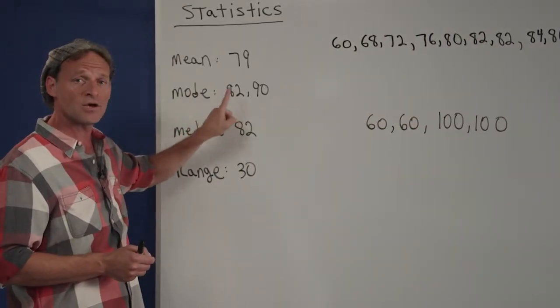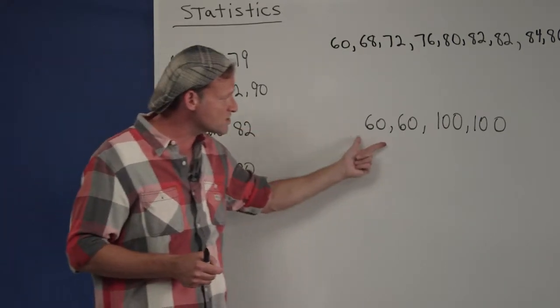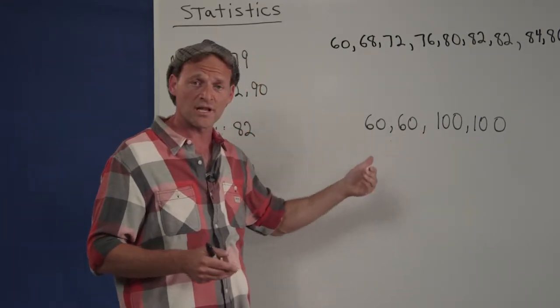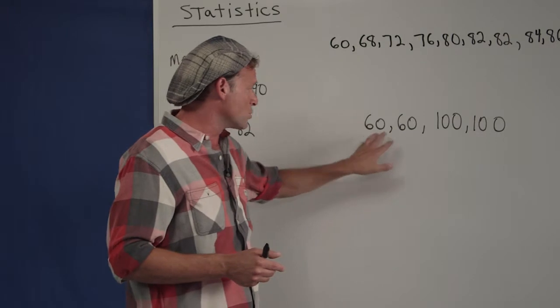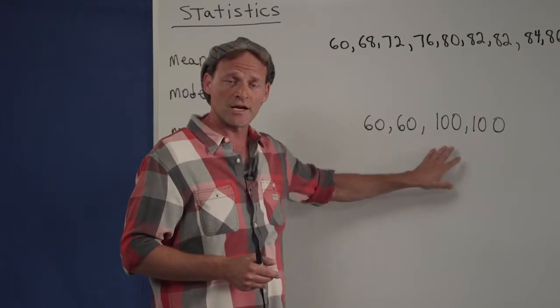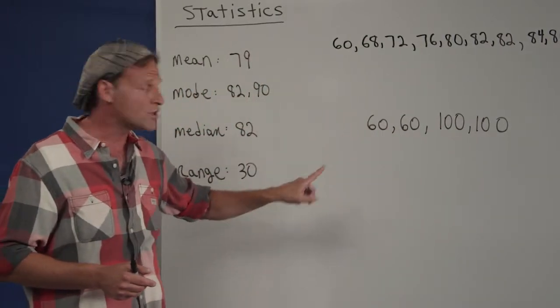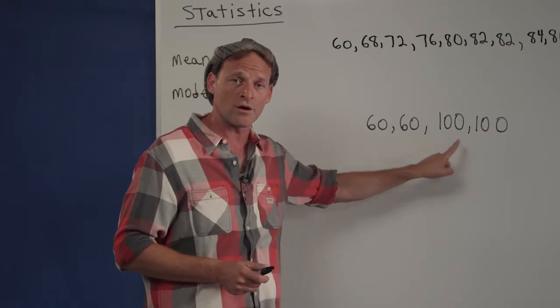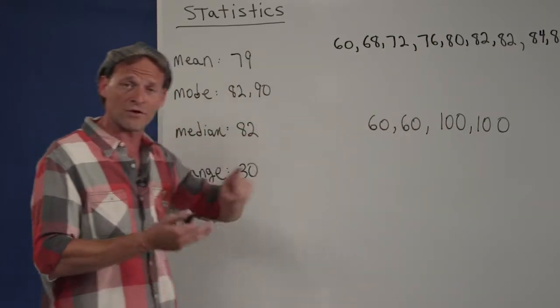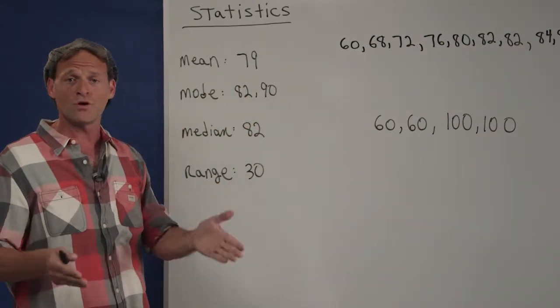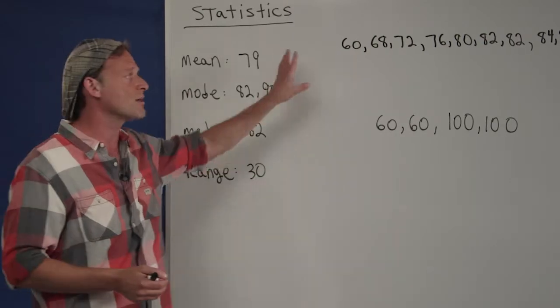If you look at this second example here, let's say this is a class of four: two students getting 60s, the other two getting hundreds. There is no mode because no number comes up more than any other number. Therefore, you could have no modes, one mode, two modes, as many modes as the problem indicates.